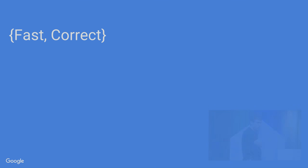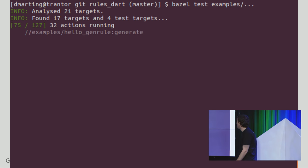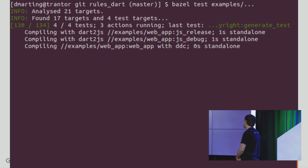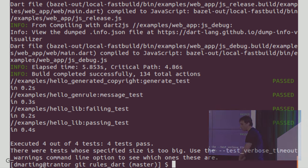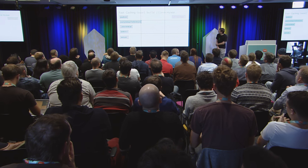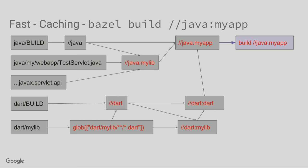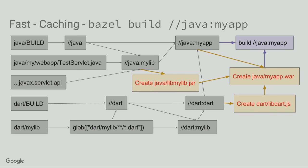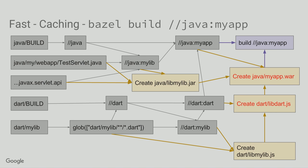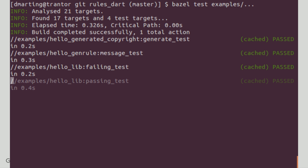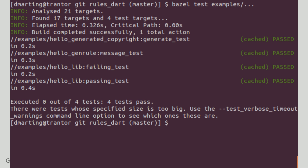Thanks to that, it can be fast and correct. Let's see what a build looks like. We run a bunch of tests — it's running a lot of things. That's a clean build, so it has no information before running. It does this by constructing in memory a graph of all your dependencies. Once it has that graph, it can follow which dependencies have changed and rerun the action. If you rerun the same build, it actually does nothing — it just returns the same information and says it has cached the test result.